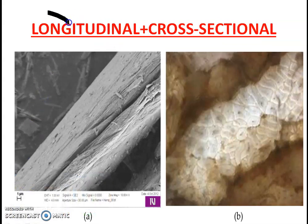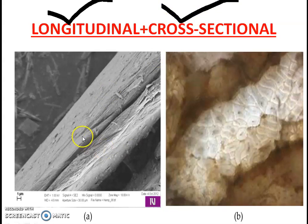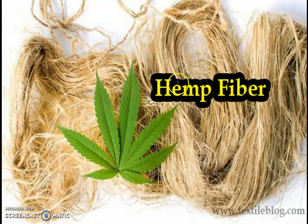Hemp fiber has been used for centuries to manufacture clothes, bags, shoes, paper, building materials, and insulation. In the longitudinal view under the microscope it appears smooth and cylindrical with cross-marking nodes. This is the actual hemp fiber.